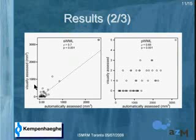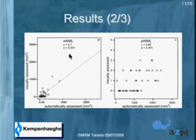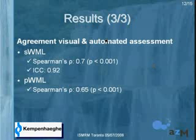These are the results. On the y-axis are the visually assessed scores, on the x-axis the automatically assessed values, and the dotted line is the x equals y line. The correlation is quite nice — the Spearman rho was 0.7 and significant for subcortical white matter lesions, with an ICC of 0.92. For periventricular white matter lesions, the visual assessment yielded only a score rather than a volume; the Spearman rho was 0.65, also a nice correlation.